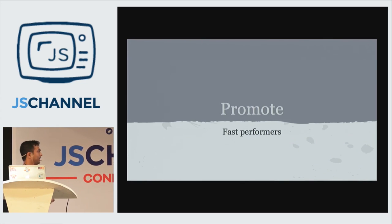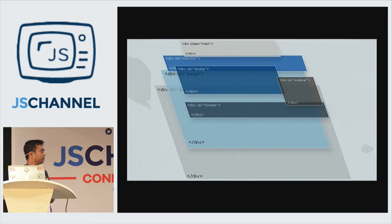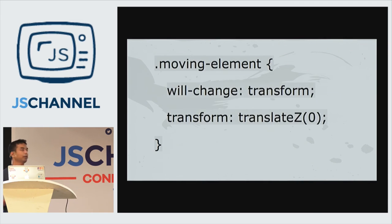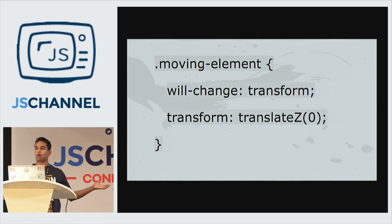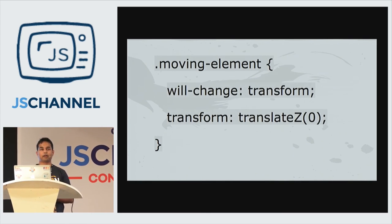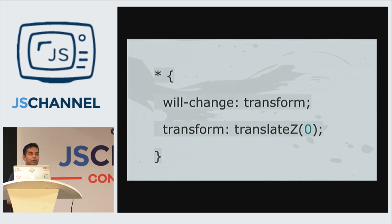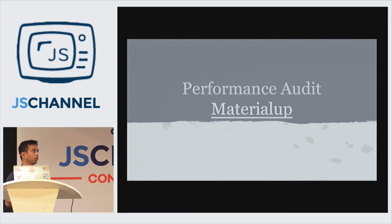What about promotions? When you see a particular element having a lot of re-renders, promote it to its own layer so it's just composited at the end and delivered for re-rendering. You can do this for a moving element using the CSS classes will-change: transform or transform: translate3d(0,0,0), which promotes it to its own layer. But why not promote everyone? Because that would be a serious overhead — there would be many layers and compositing them would take much more time.